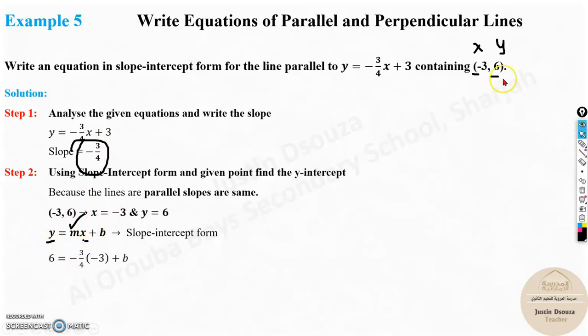So all you are doing is the y value is 6 substitute over here equals minus 3 by 4. That's the slope and x is minus 3 given. Now find the b value. Look over here, you need to multiply these both. You will get 6 equals minus minus becomes plus. So I'll not write it. It's plus 9 by 4 plus b. Now what you have to do is to find b, you need to subtract 9 by 4 from 6.